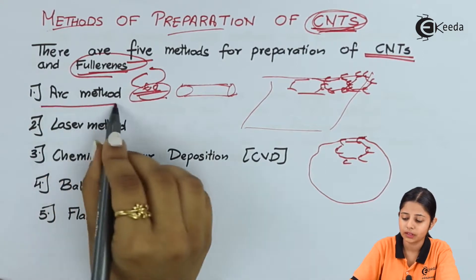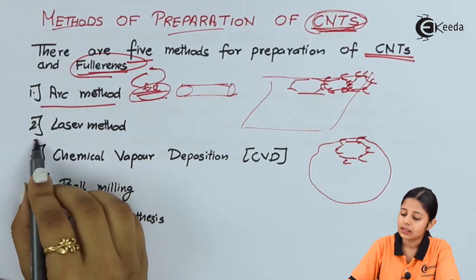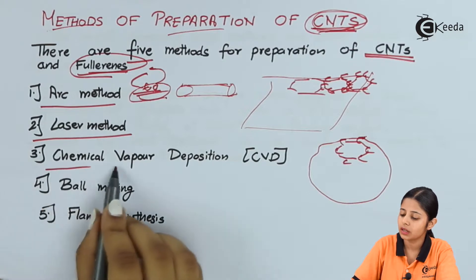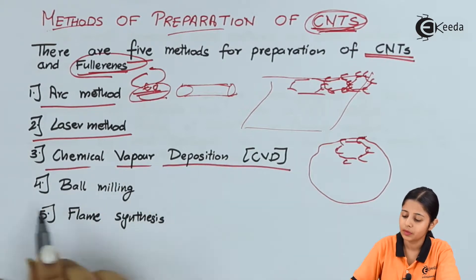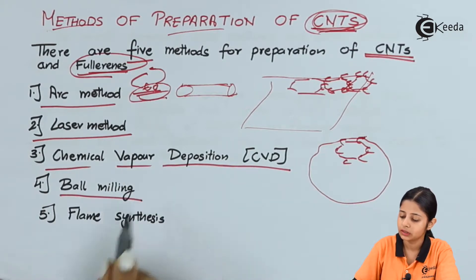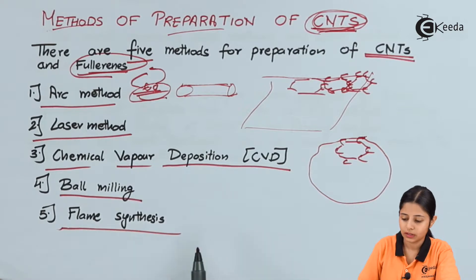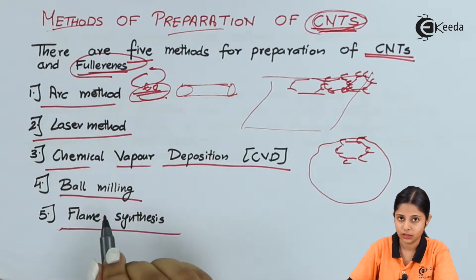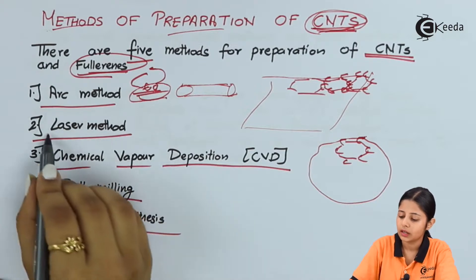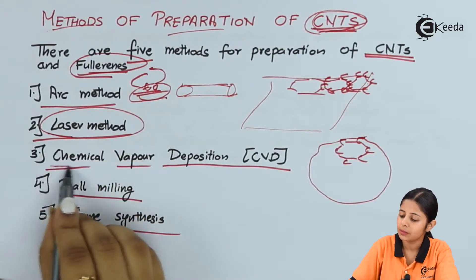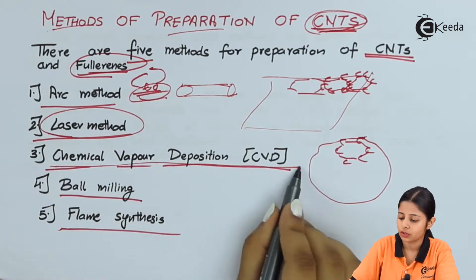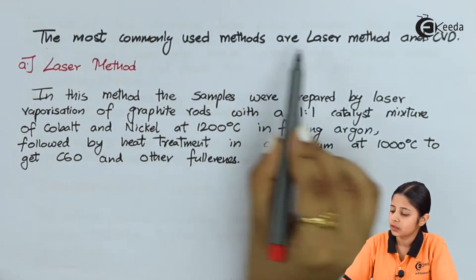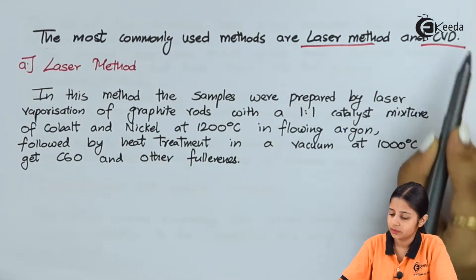The five methods are: the arc method, the laser method, the chemical vapor deposition (CVD) method, ball milling, and flame synthesis. Out of all these five methods, the most important ones are the laser method and the chemical vapor deposition method. Let us see them in detail — the most commonly used methods are the laser method and CVD.